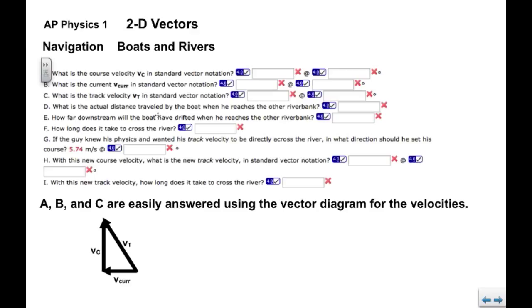Now what we're asked in a problem of this type: A, B, and C deal with this vector diagram that we already drew. So we know the course, the magnitude of the course velocity. We know the magnitude of the current. We can use Pythagorean theorem to find the magnitude of the track, and again use trigonometry to find its mathematical direction. So A, B, and C are pretty easy.